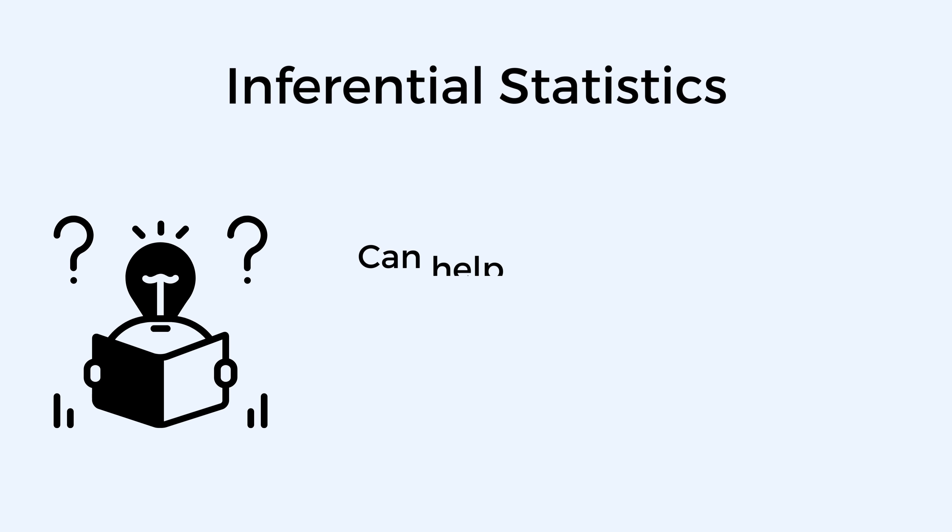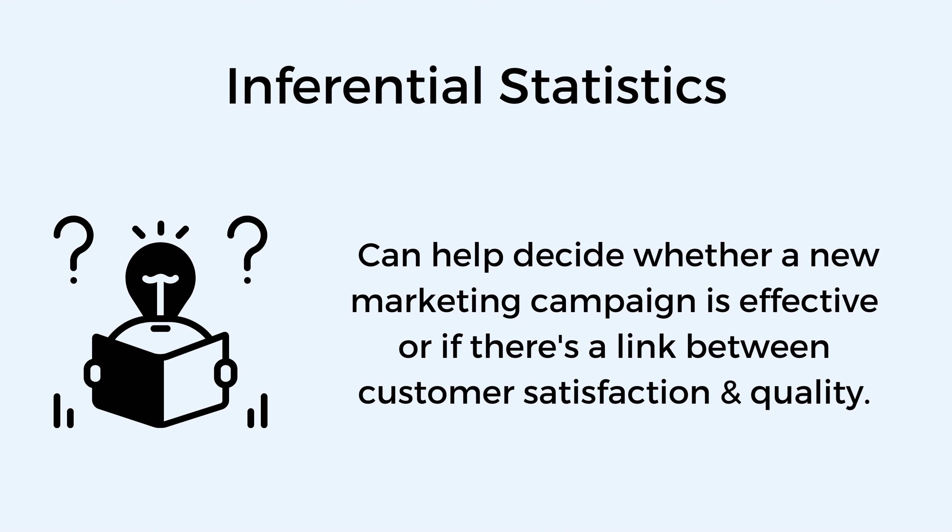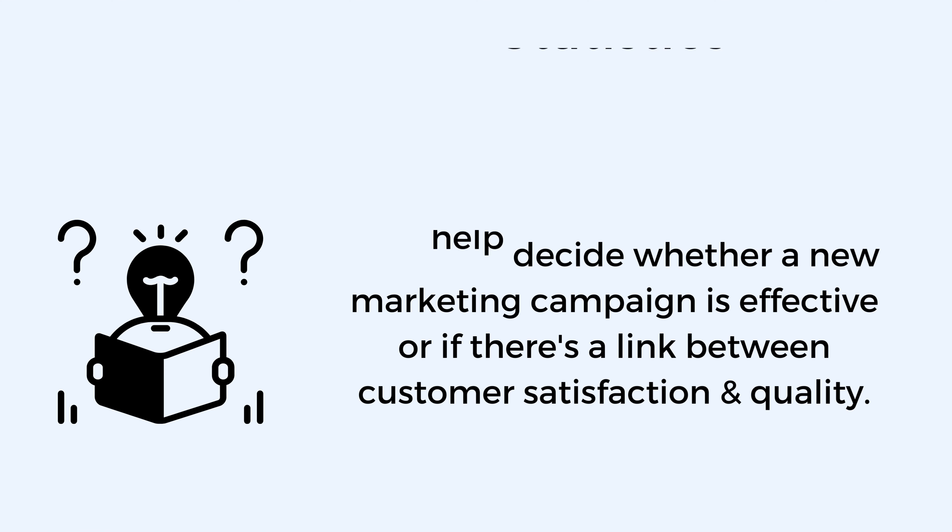Inferential statistics are all about drawing conclusions about an entire population based on a sample. Key examples include hypothesis testing and confidence intervals. This is crucial for determining whether a relationship between two variables is statistically significant. For example, it can help decide whether a new marketing campaign is effective or if there's a link between customer satisfaction and product quality.